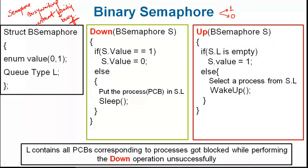The binary semaphore, I repeat, is a semaphore that can take a value of one or zero. Earlier we studied the counting semaphore, in which the semaphore can take any positive or negative value. The positive initial value tells you how many processes can enter the critical section at the same time. The negative value, after executing some P or V operations, tells you how many processes are blocked and waiting in the queue.